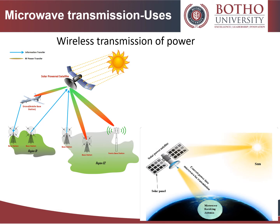Wireless transmission of power is also a main use of microwave transmission. The microwave link is used for wireless transmission of power — for example, for connecting solar power collecting satellites to terrestrial power grids. A Solar Power Satellite (SPS) is an energy system which collects solar energy in space and transmits it to the ground. It has been seen as a promising infrastructure to resolve global environmental and energy problems.